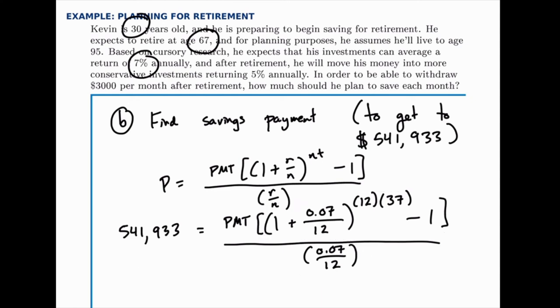And if you do that, you should find that PMT is about $258.49. So that's the amount that he should start saving today.